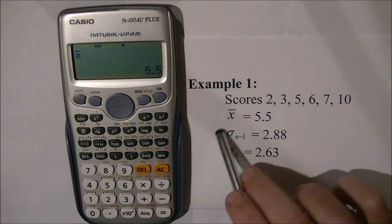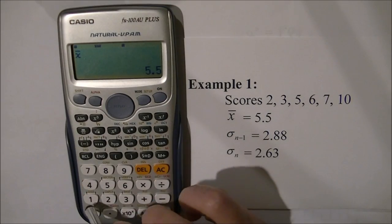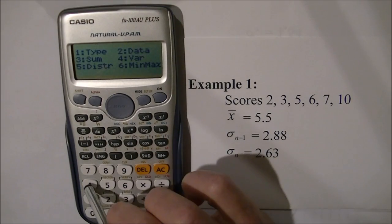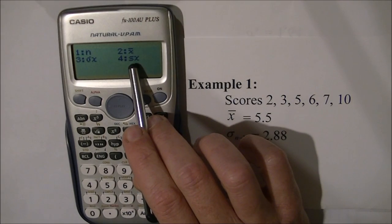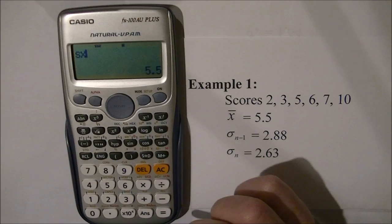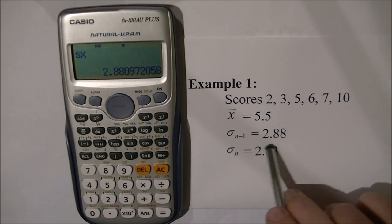Next, I'll find the sample standard deviation. Press SHIFT, 1 to return to the menu, 4 for variation, and press key 4 to get the sample deviation. Press 4 equals, and the answer is 2.88.